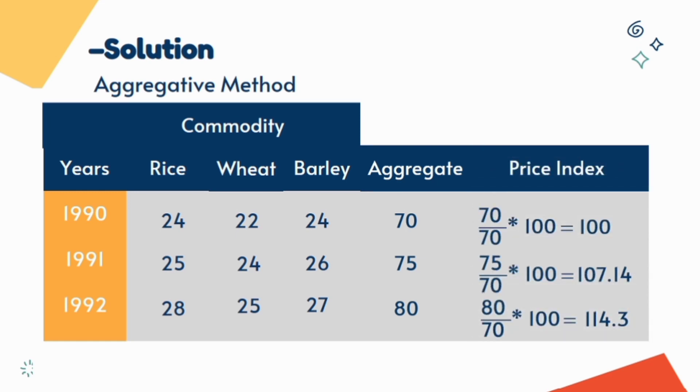Which tells us the prices of these daily items can be seen more than 7 rupees in 1991 as compared to 1990, and in 1992 it has been recorded more than 14 rupees.